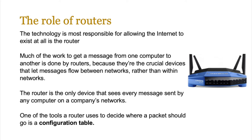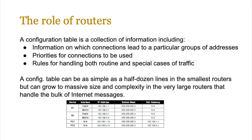A configuration or routing table is a collection of information in the form of a table that includes information on which connections lead to a particular group of IP addresses, priorities for connections to be used, and rules for handling both routine and special cases of traffic. This table can be as simple as half a dozen lines in the smallest routers, but can grow to massive size and complexity in the large routers that handle the bulk of internet messages.